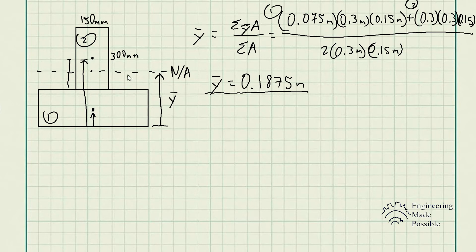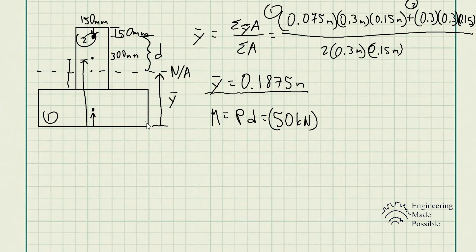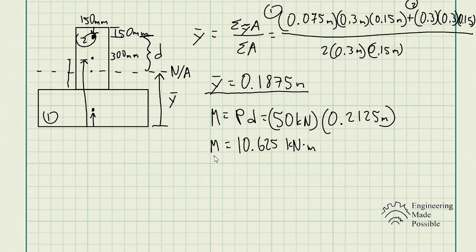Since we know the external load is applied 50 mm from the top portion downward — force P, 50 mm — the moment is calculated with respect to the neutral axis. That gives us the external load times the distance from where the load is applied to the neutral axis. Since we know the total dimension from top to bottom and already have y-bar, we can solve for distance d, which is 0.2125 meters. Our moment is therefore 10.625 kN·m.